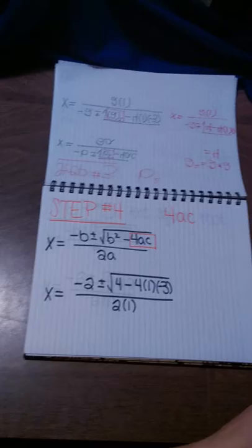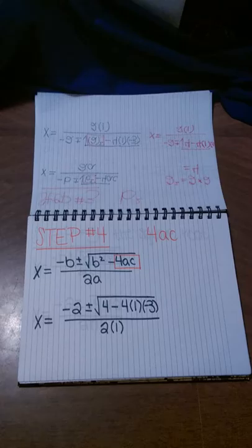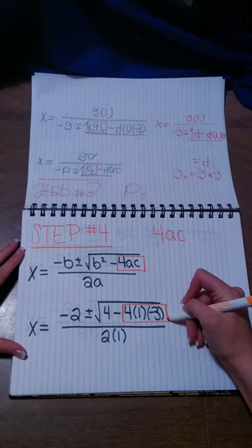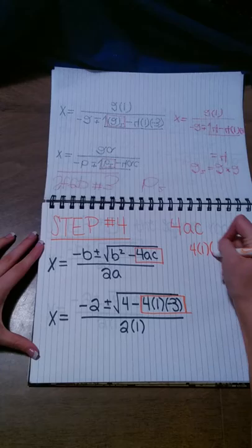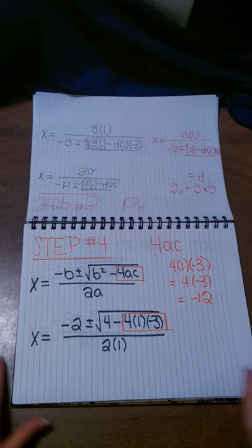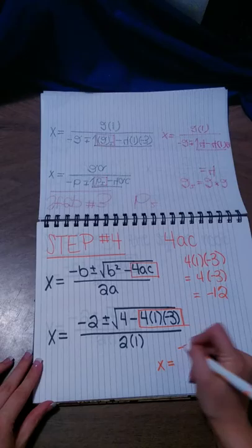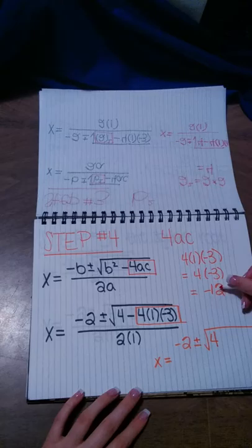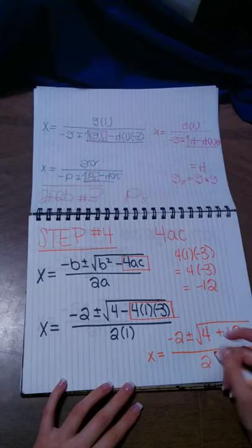Step number 4 is focusing on the 4ac. We can see that the 4ac chunk is 4 times 1 times negative 3. So 4 times 1 is just 4, and 4 times negative 3 would be negative 12. Writing all of this out again, we have x equals negative 2, plus or minus square root of b squared — which was 4 — then minus our 4ac which is negative 12. And since minus a negative is a positive, we just write plus 12 there, all over 2 times 1.